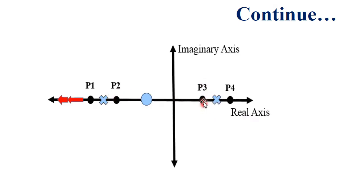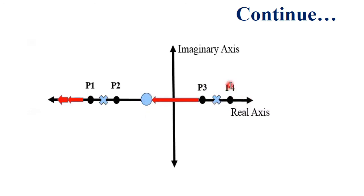For pole P3, towards the right side there is one pole — an odd number — so the branches will be on the real axis, and the limit of this branch reaches towards the next zero and stops there. For point P4, there are no poles and zeros on the right side, so there will be no branch on the real axis of the S-plane. This is how we can show the branches on the real axis in root locus.